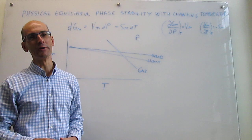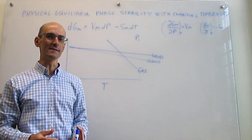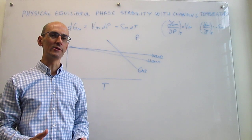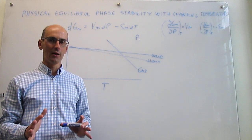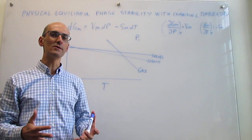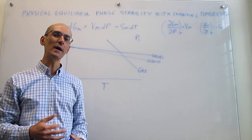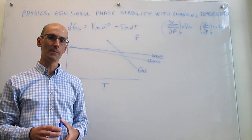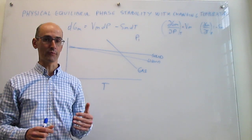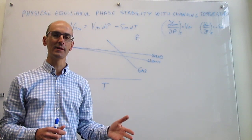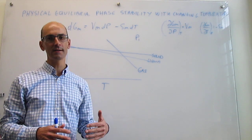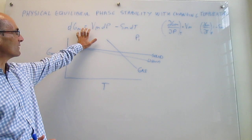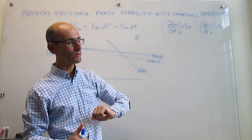In this video we are going to learn how phase stability can be controlled with both temperature and pressure simultaneously. This video is a culmination of the last two, in which we have seen independently how you can control the stability of a phase with pressure at constant temperature and with temperature at constant pressure. All of that is dictated by the variation of the molar Gibbs energy on pressure and temperature.